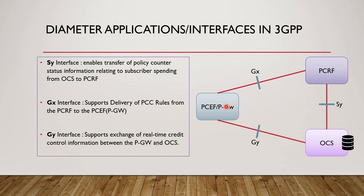From this slide we'll specifically talk about the SY, GY, and GX interfaces. The SY interface is used between PCRF and OCS. Its base protocol is diameter, and it's specifically designed for policy exchange between the PCRF and OCS. PCRF holds policy information while OCS holds account information. PCRF needs account-related data from OCS, which is why the SY interface was designed. The GX interface is between PCEF and PCRF and is used to support PCC rules.